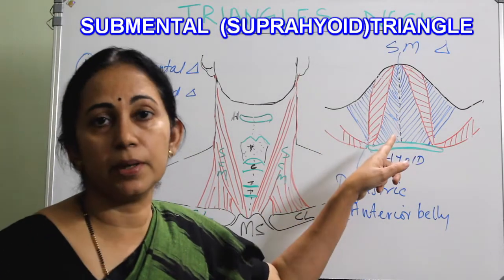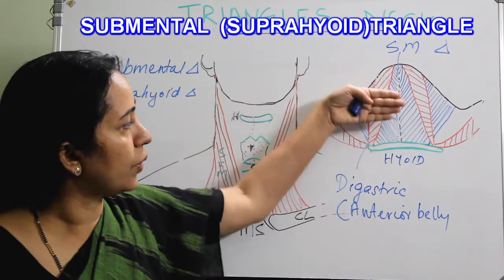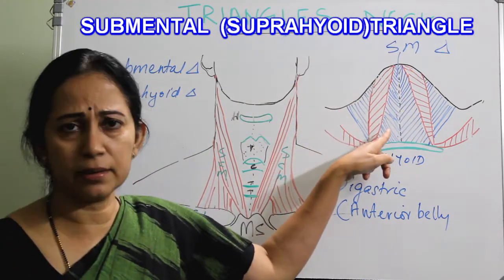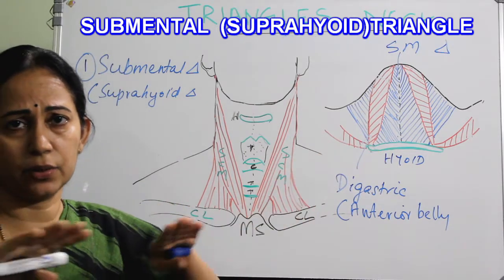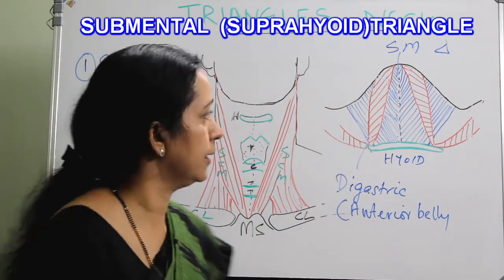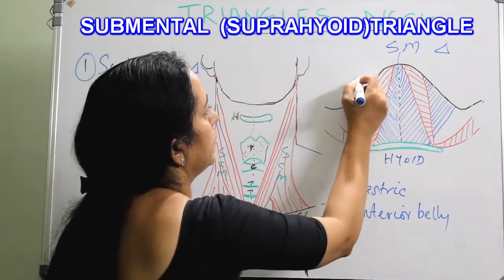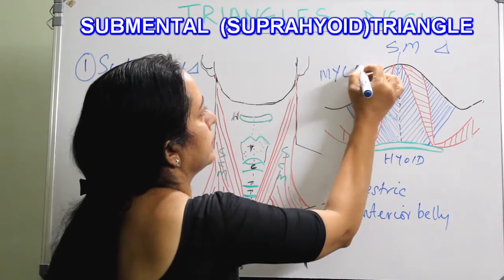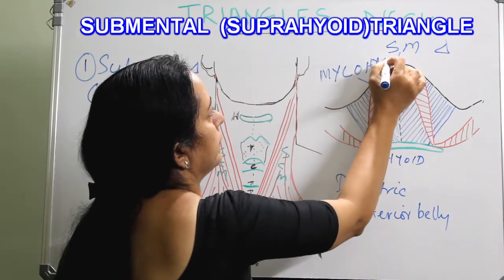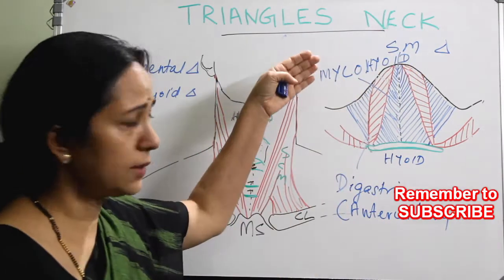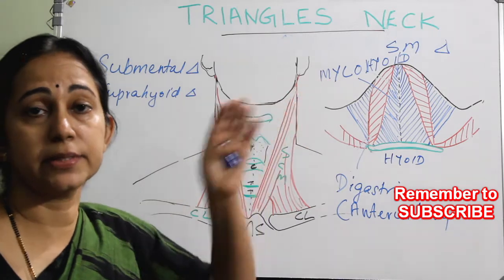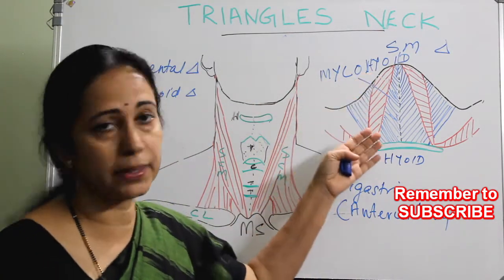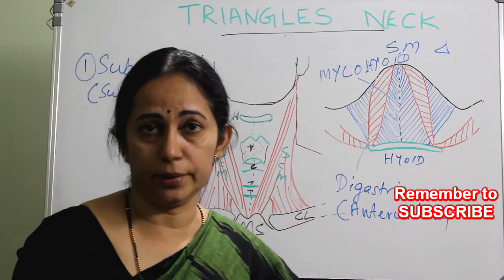The floor of the submental triangle is formed by a fan-shaped, very flat muscle — the mylohyoid muscle. This is a very important muscle. The mylohyoid muscle forms the floor of the submental triangle.